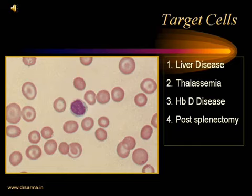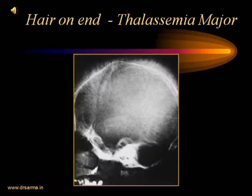The blood smear shows target cells. Target cells are RBCs that have a central round target-like ring of hemoglobin, followed by a ring of pallor and another ring of hemoglobin. These target cells are a feature of chronic liver disease, thalassemia, hemoglobin D disease, and post-splenectomy state. This is a lateral radiograph of the skull in a case of thalassemia major — a hemoglobinopathy where red cells are destroyed and hemolysis occurs.